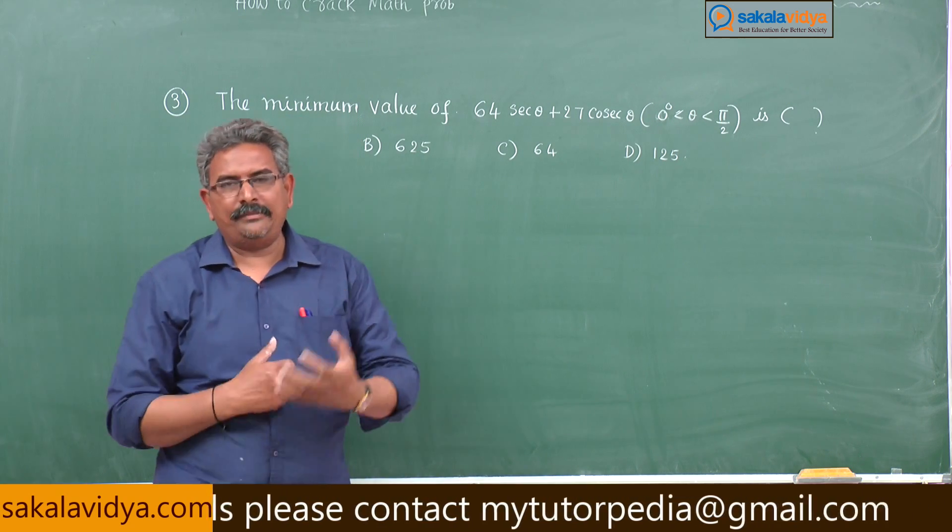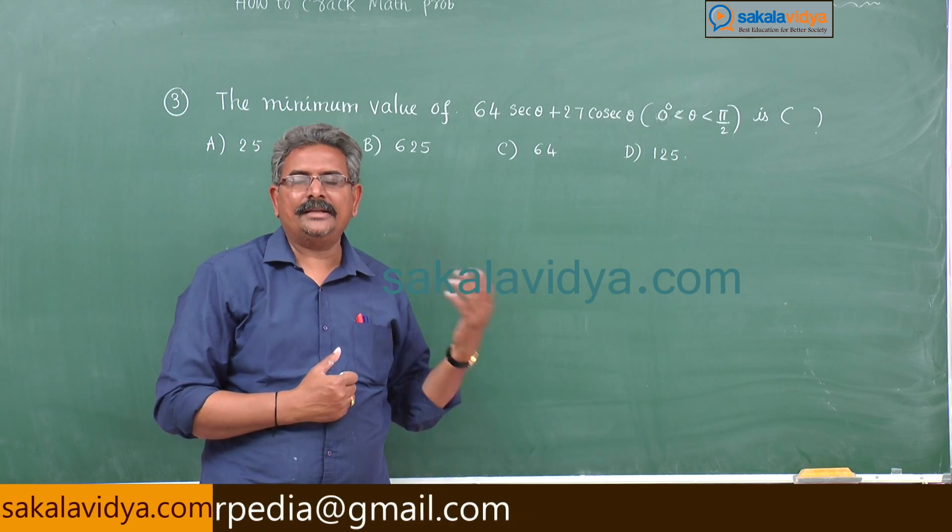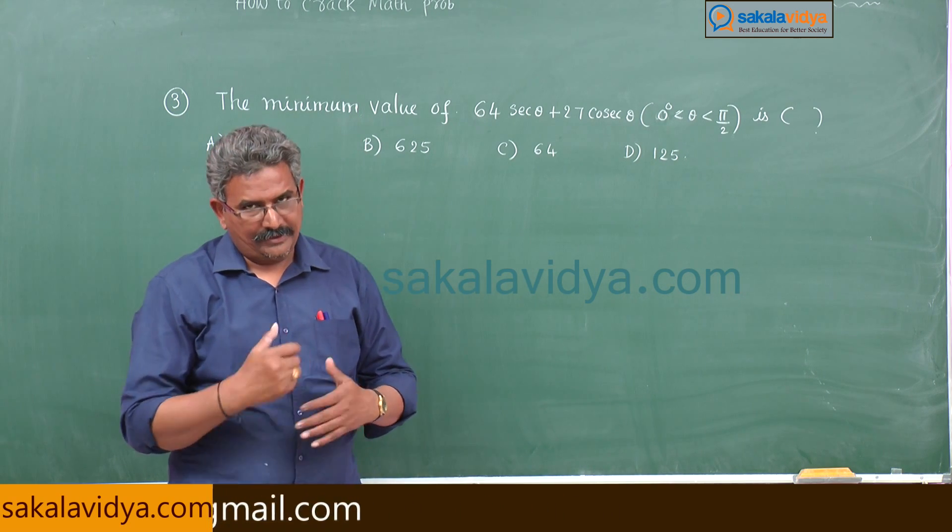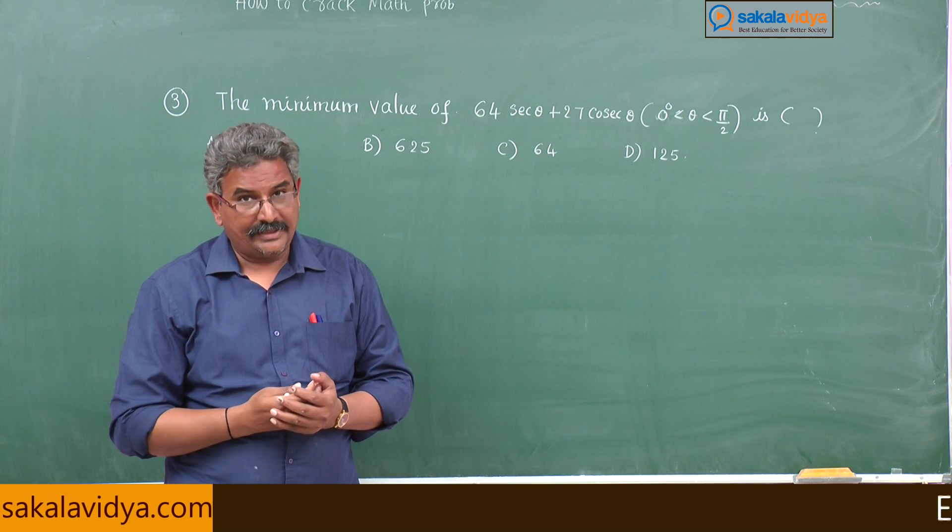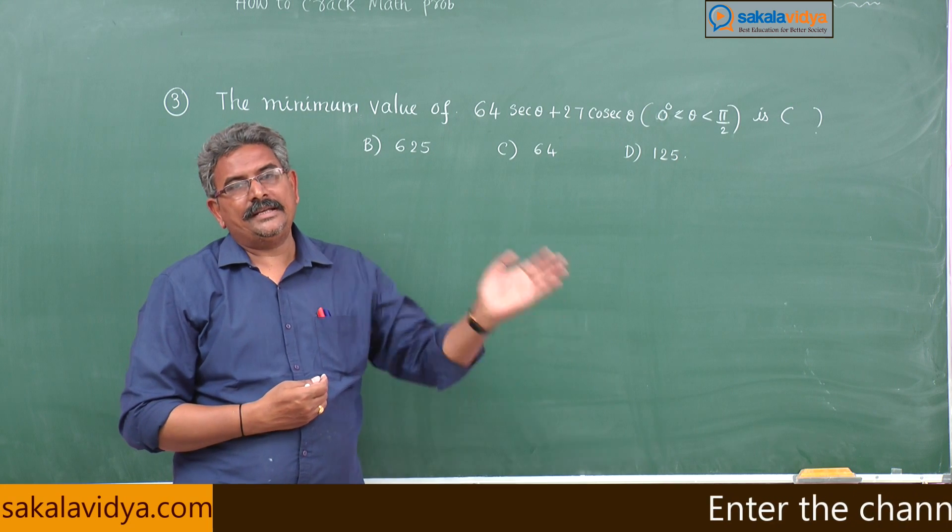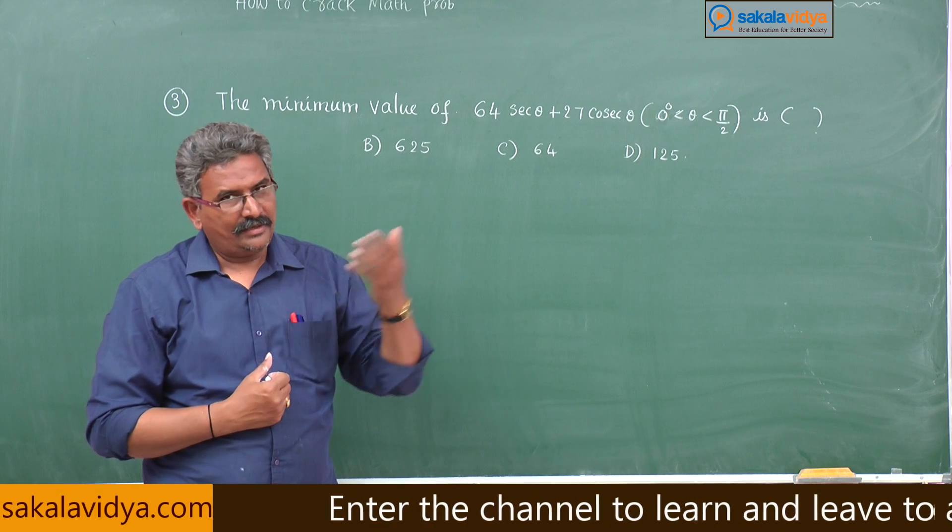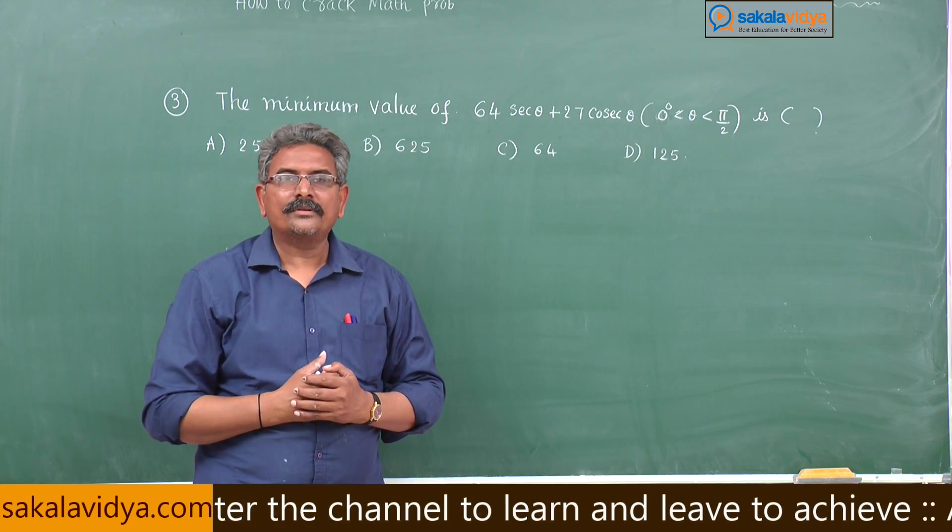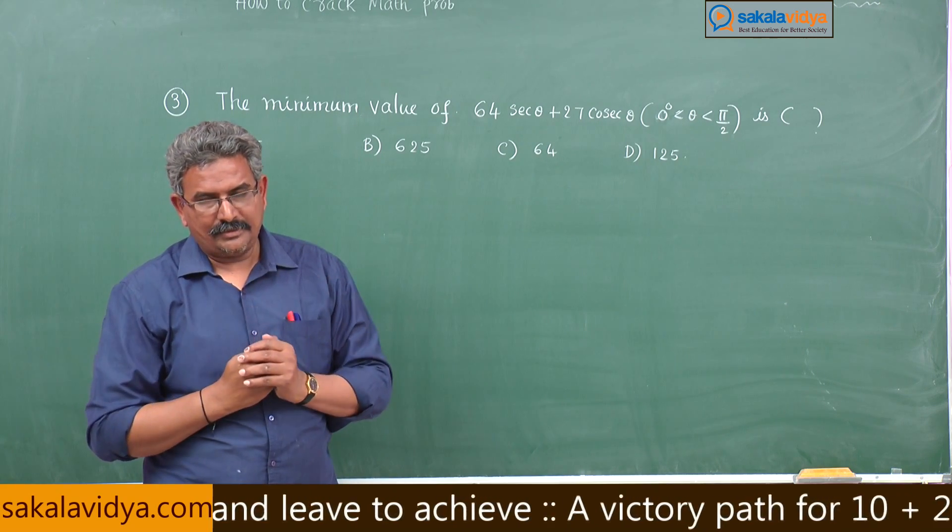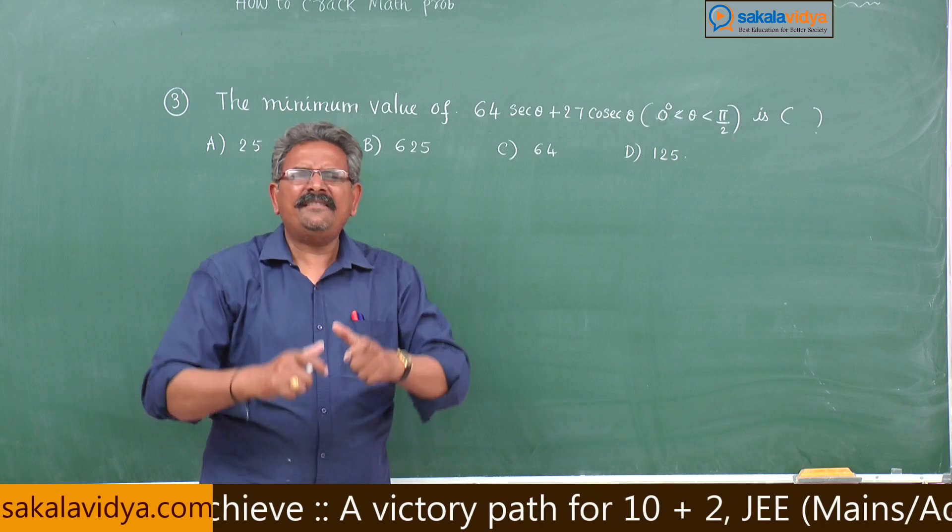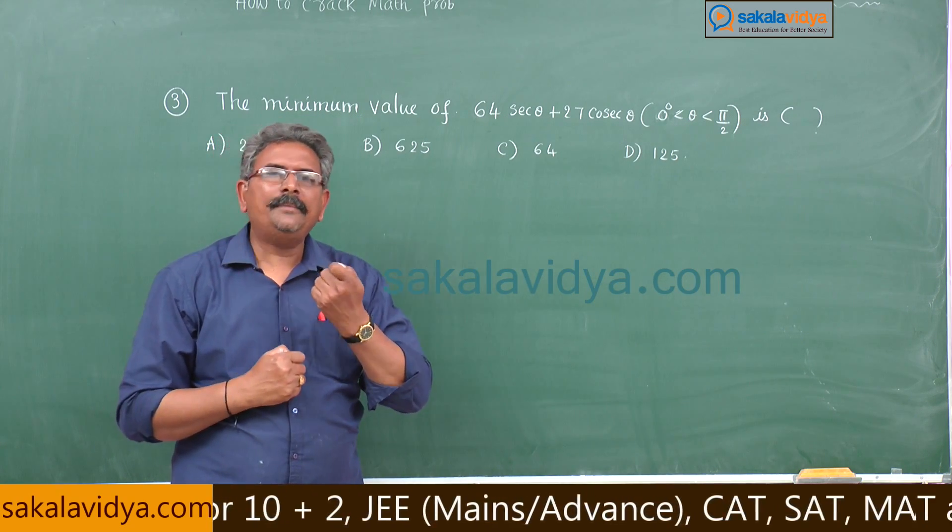You have to find out the minimum value of 64 secθ plus 27 cosecθ. You know how to find maximum and minimum - you have to differentiate it with respect to θ. Again differentiate to find second derivative, and first derivative is equated to 0 to get θ value. Substituting θ value in second derivative you check whether it is greater than 0 or less than 0. That determines whether it is minimum or maximum - that is very lengthy and typical method.